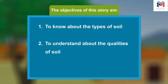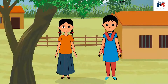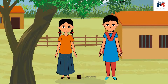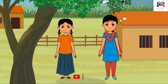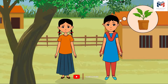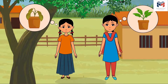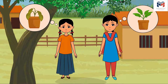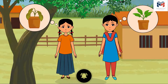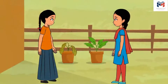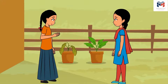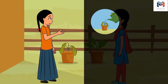This is Nilu and that is Minu. Both of them had planted a plant in two different pots. Nilu's plant had become lush and green, however Minu's plant did not grow much and had no fresh green leaves. They were discussing this: 'Oh Nilu, look, my plant is drying up. I put enough water, kept it in the sunlight, and there is enough air also, yet it is dry.'